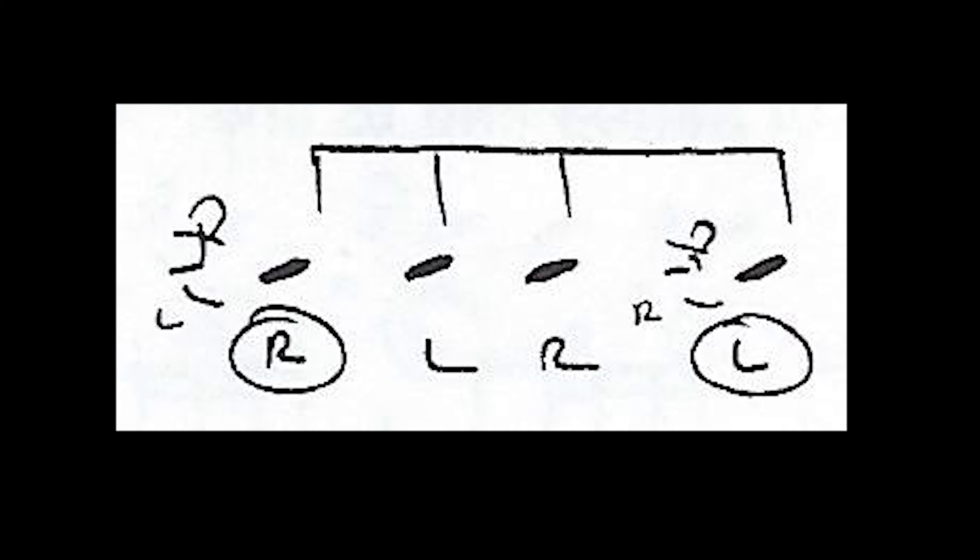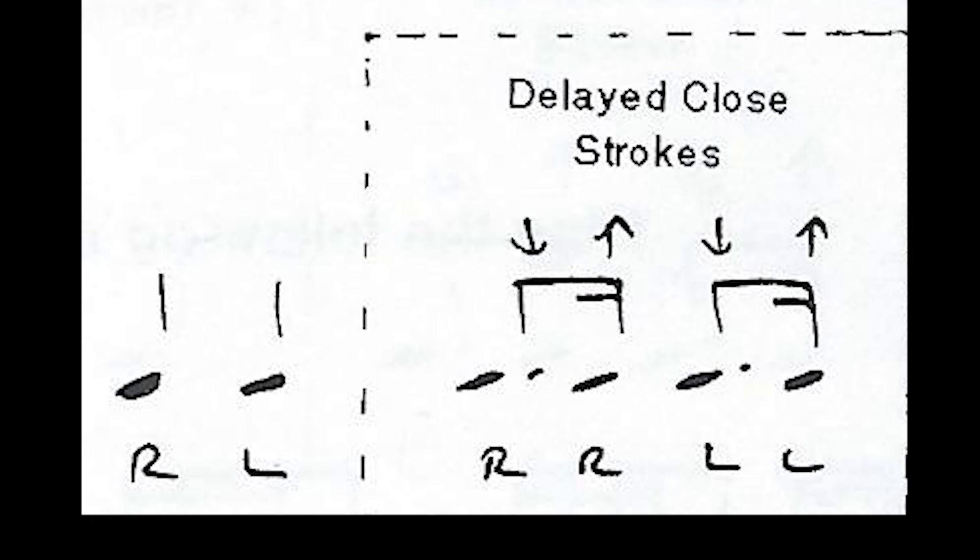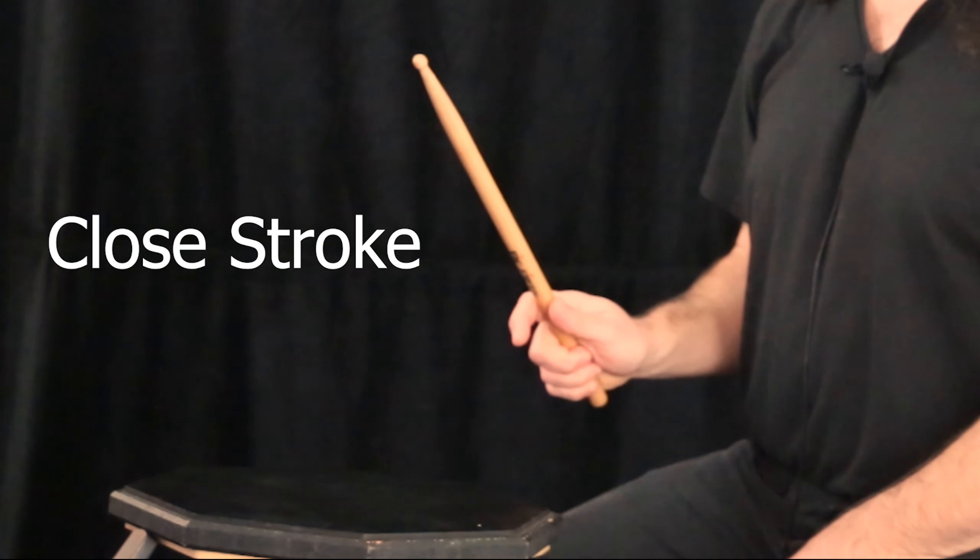So what do I mean when I say delay the closed stroke? Notice the flams when written in standard notation that the grace note is attached to the main note. By using slow motion notation the grace note can be assigned a rhythmic value and in this case a sixteenth. These new rhythmic placements also happen to be on the closed stroke when applying open close. Here's the patafla-fla as written using slow motion notation.